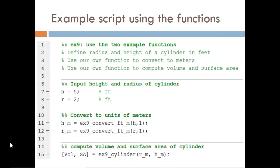Here is the script that brings it all together. First it assigns values to h and r in units of feet. Then it calls the converter function twice, once for height and once for radius. Now with variables in the proper units of meters, the cylinder function is called to produce the volume and the surface area.